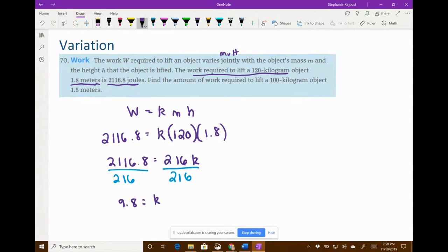Sometimes you have to round and you base that to how many decimal places. They give us numbers with one decimal place, so we'd round to one decimal place. But this came out exactly with we don't have any decimals to round. So now that I know K, I know my formula is W equals 9.8 M H.